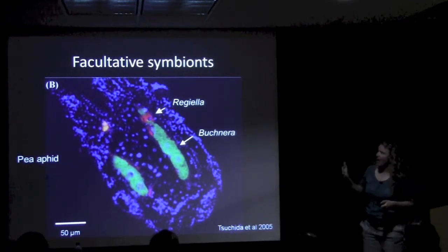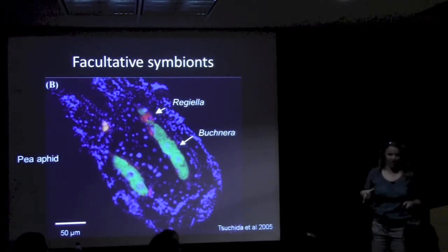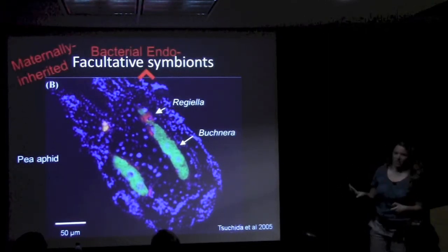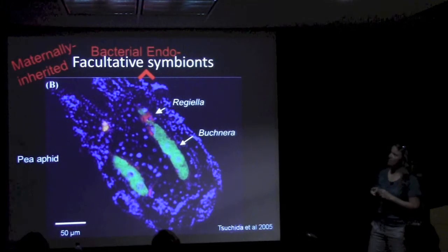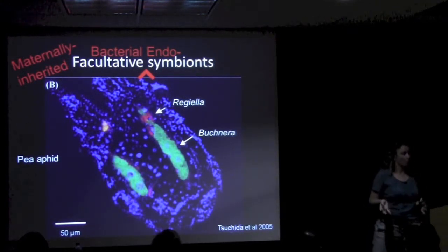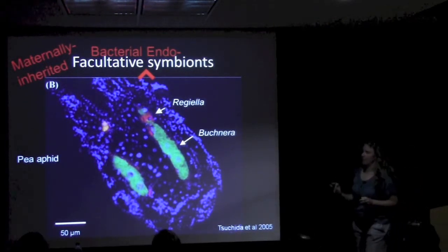Let me add a caveat. When I say 'facultative symbionts,' that is my personal shorthand — what I really mean are maternally inherited facultative bacterial endosymbionts, which is an incredible mouthful, which is why I don't say it every time. Let me break this down: maternally inherited means these are symbionts passed from mother to offspring, usually through the cytoplasm of the egg, and are essentially a heritable trait.